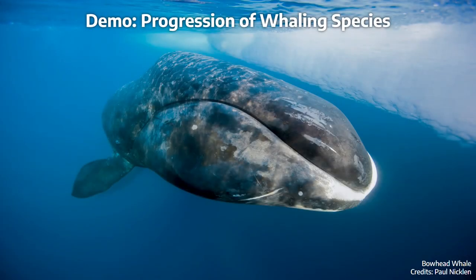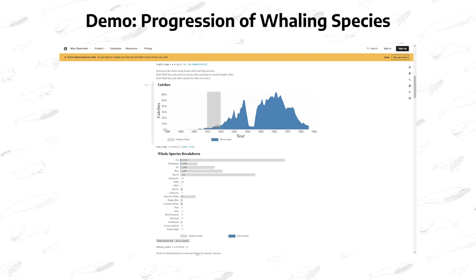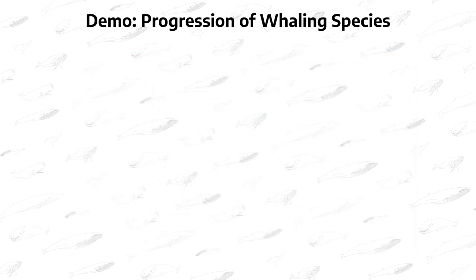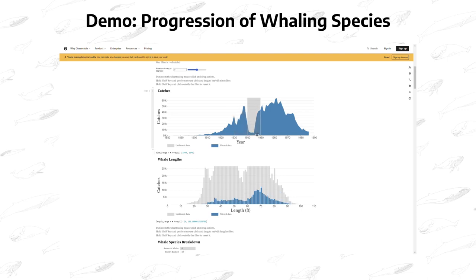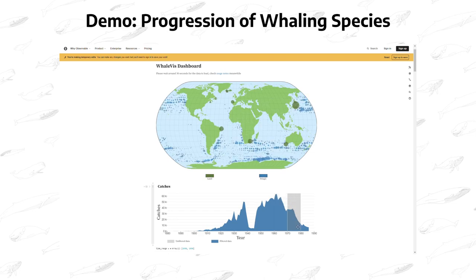Let's look at a use case demonstrating the use of WhaleVis to understand how humans switched from whaling one species to another over time. By inspecting consecutive 10-year periods using the time filter, we can see three things. First, we hunted blue and fin whales during the 1900s, then moved on to the relatively smaller sperm and sei whales, and by the time whaling was banned by the IWC in 1986, we were mainly hunting the even smaller minke whales. Second, we first hunted the bigger species owing to higher commercial gains per catch, then moved to smaller species as the bigger ones declined in numbers. Finally, we were restricted to hunting near the coast before the 1920s, but technological advancements thereafter enabled hunting in the middle of the oceans, especially in the Antarctic waters.